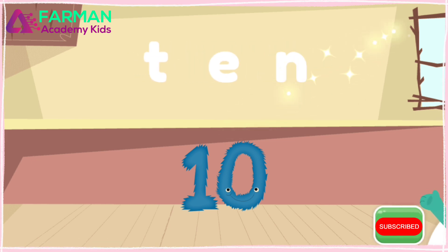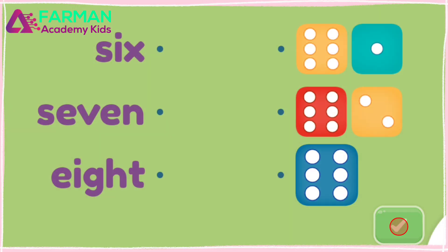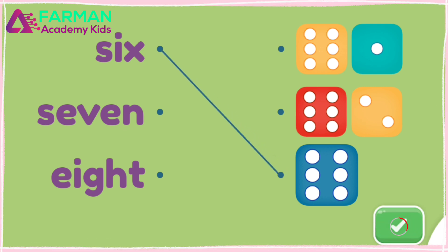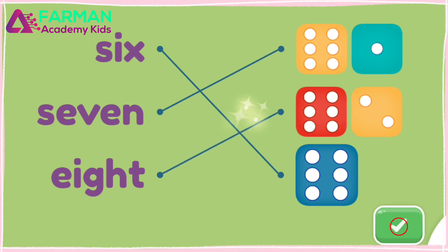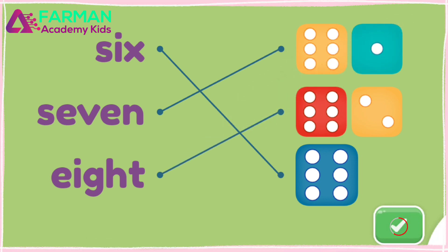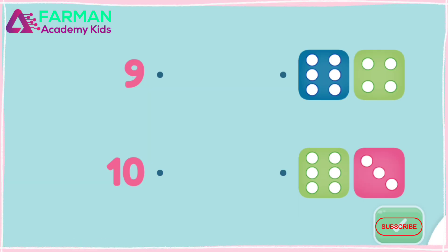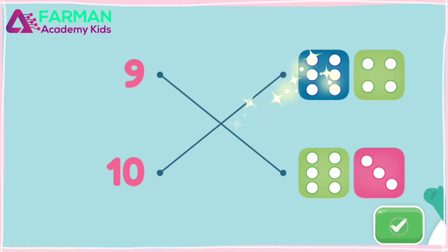You spelled the word 10. Connect the words with the dice with the right number of dots. 6, 7, 8. Nice! Connect the words with the dice with the right number of dots. 9, 10. Awesome! You matched them!